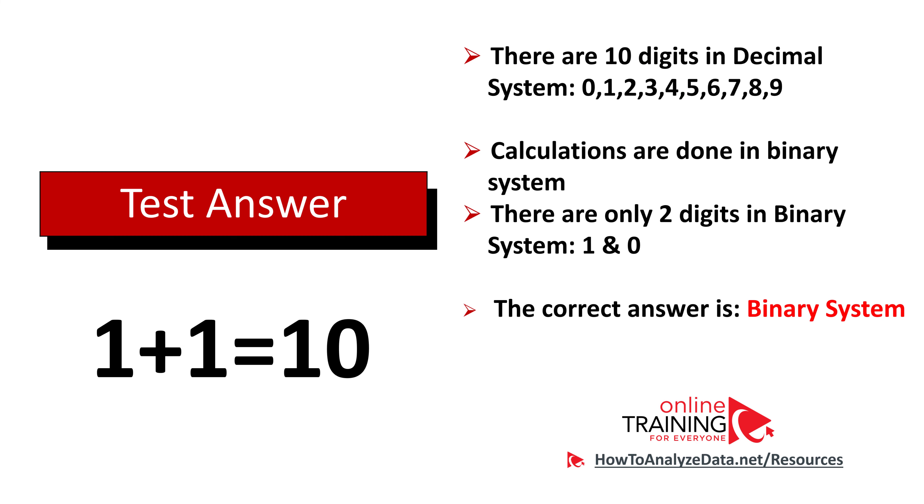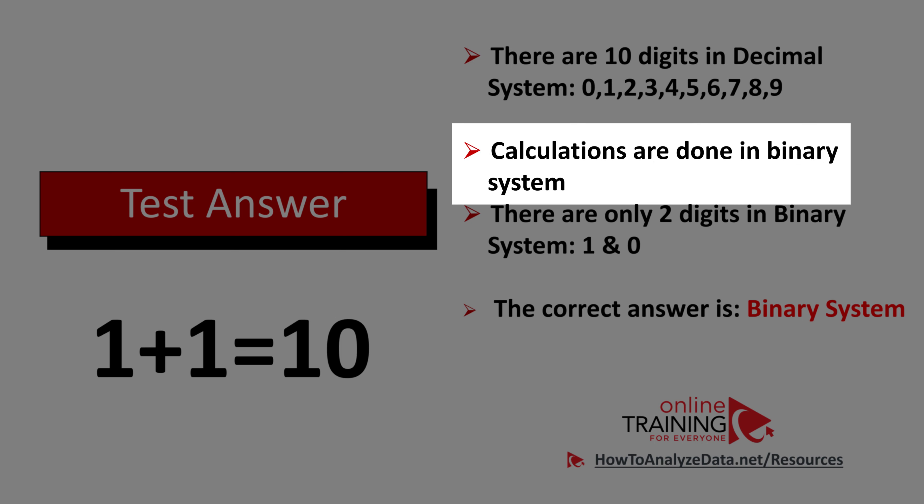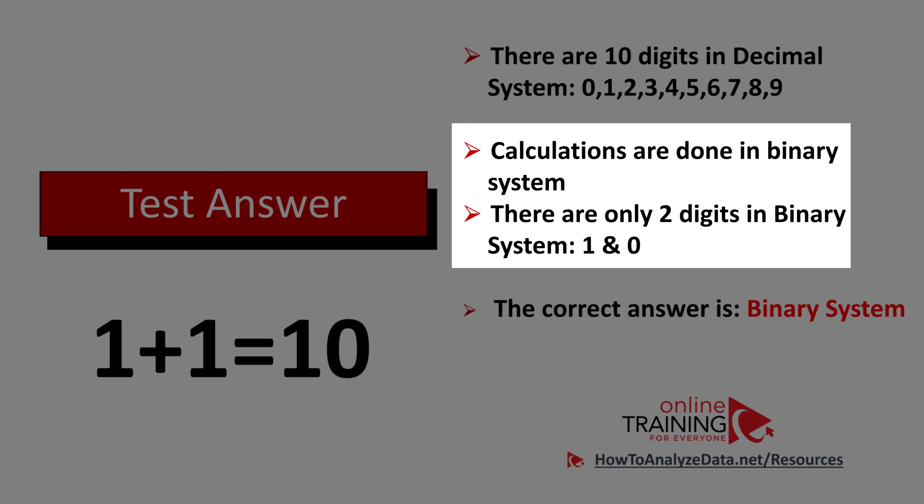Typically when we calculate we use 10 digits in the decimal system: 0 through 9. But here the calculation is done in the binary system, which has only two digits: 1 and 0. When you add 1 plus 1 in binary, what looks like 10 in binary notation actually represents the value 2 in decimal. So this calculation is correct because of the binary system.